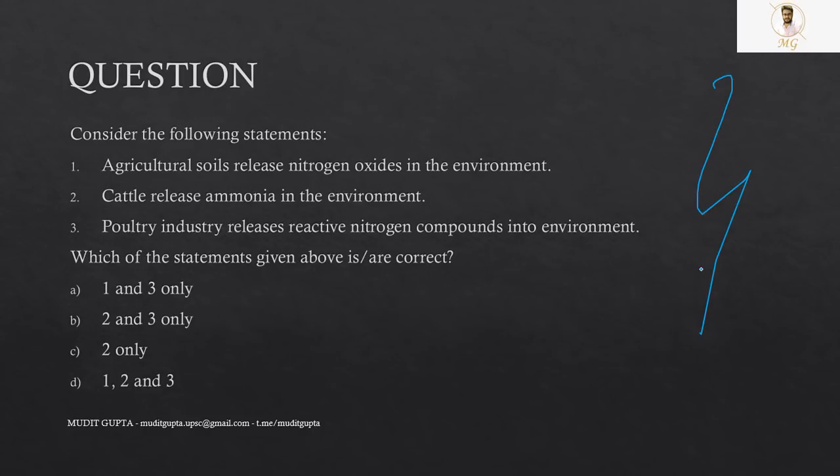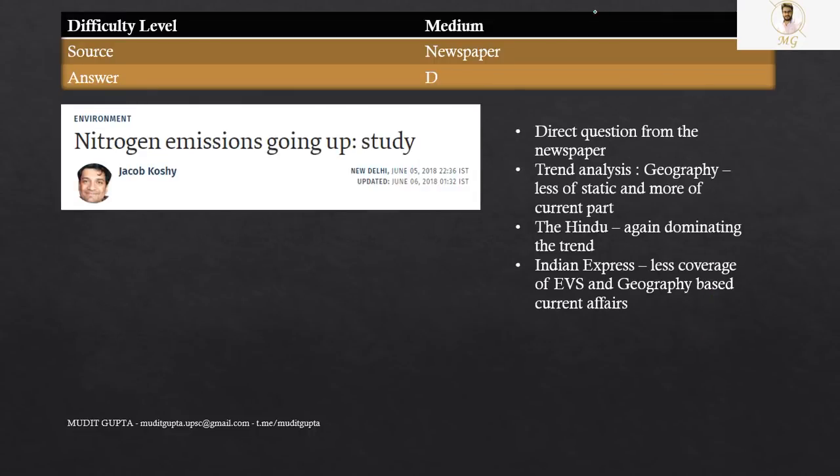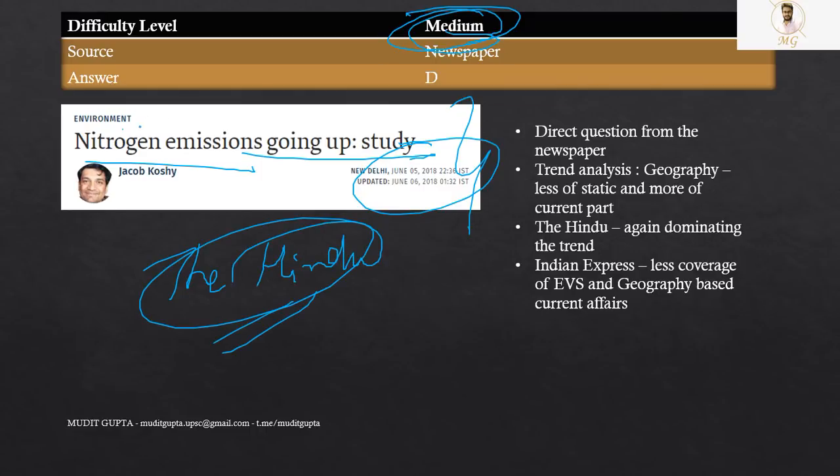Next is this particular question related to agricultural soils and poultry industry. Now as far as this question is concerned, it is a medium type of question that is given in the newspaper directly, June 5th, 2018. One year window in NCERT, nitrogen emission going up. It was directly there in the Hindu newspaper. So again, another direct question from newspaper, why medium? Because usually such news, studies and all these kinds of news, they are usually neglected by aspirants.